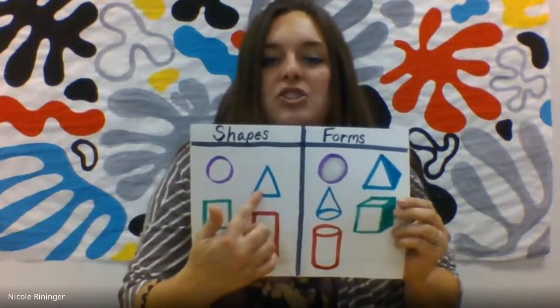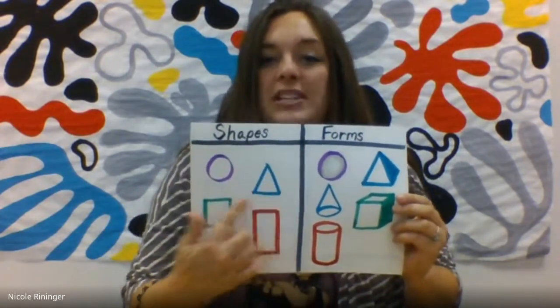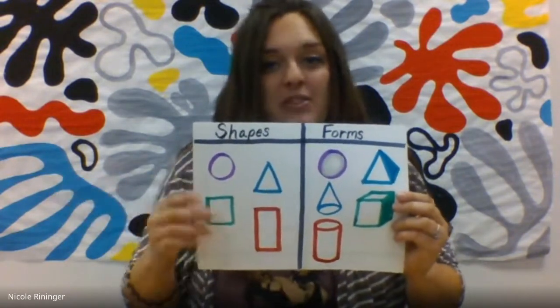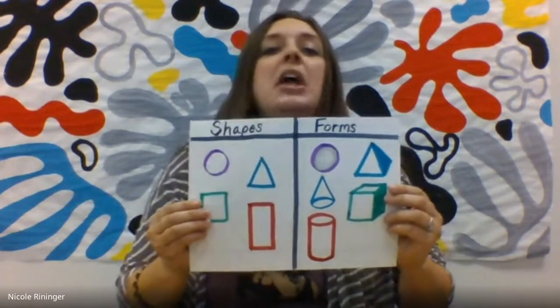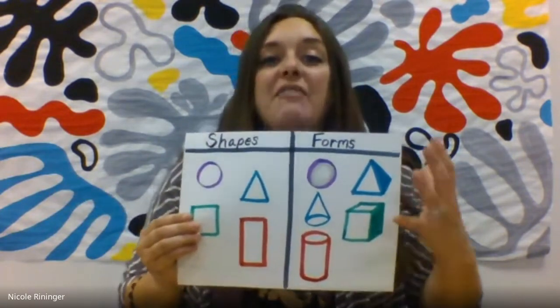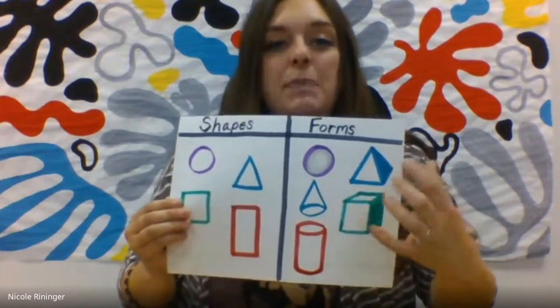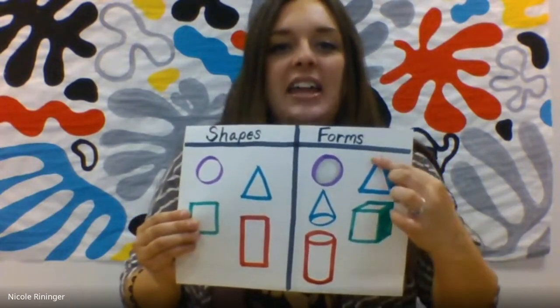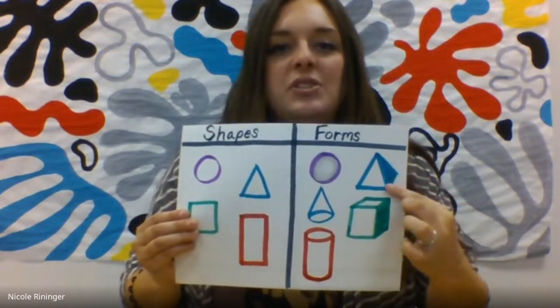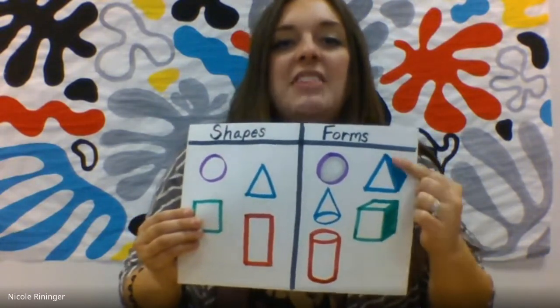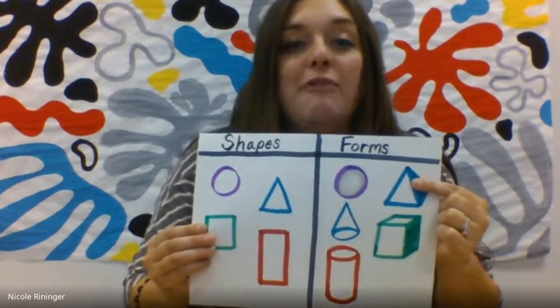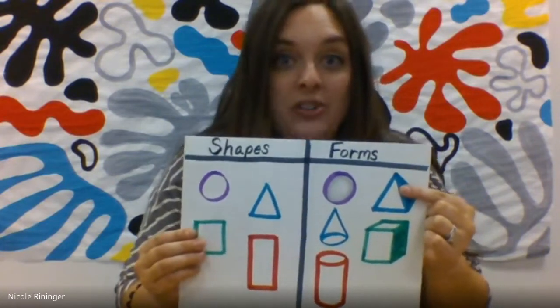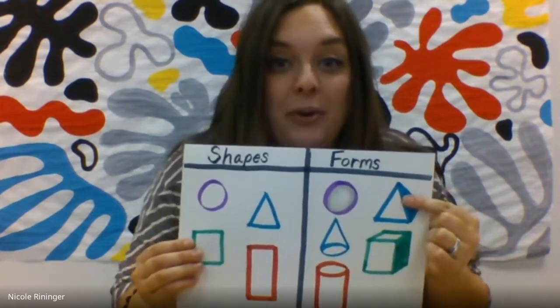Right here we have a triangle which has three sides — we learned about those last week. But if I give it space, so in this case I give it an extra side, that becomes a form called a pyramid. Can you say pyramid? Very good.